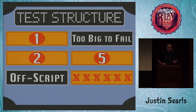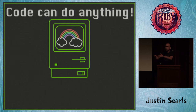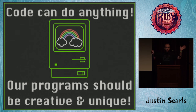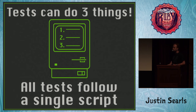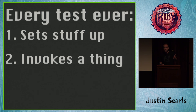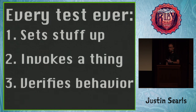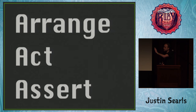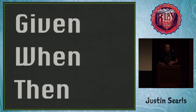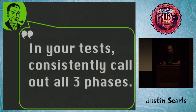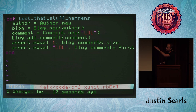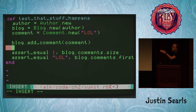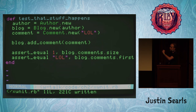The next thing people seem to hate about their tests is tests that go off script. Code can do anything — every program can be creative and unique. But tests can only really do three things; they all follow exactly the same script. Every test sets some stuff up, invokes a thing, and then verifies the behavior. It's been formalized as: the arrange phase, the act phase, and then the assert phase — or in more natural English, given, when, and then. In all my tests, I always take great pains to consistently call out all three phases. I just add a new line after my arrange, another new line after my act, so that when I'm skimming the test, I always know: this is setup, this is the behavior I'm invoking, and these are the assertions.